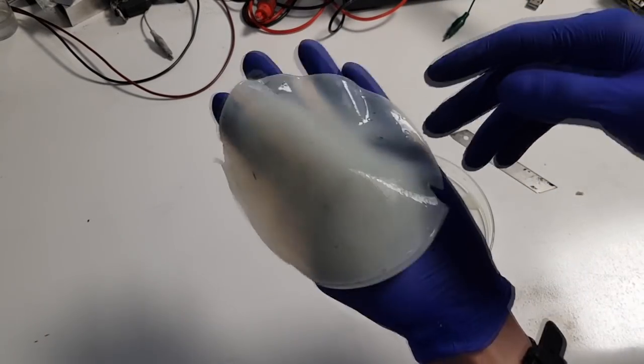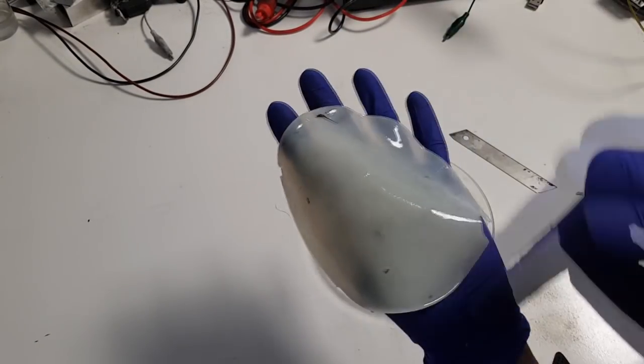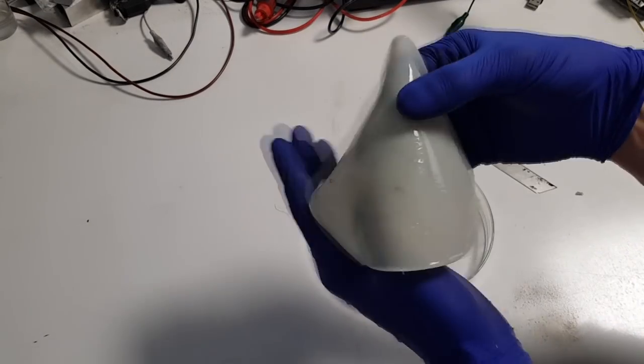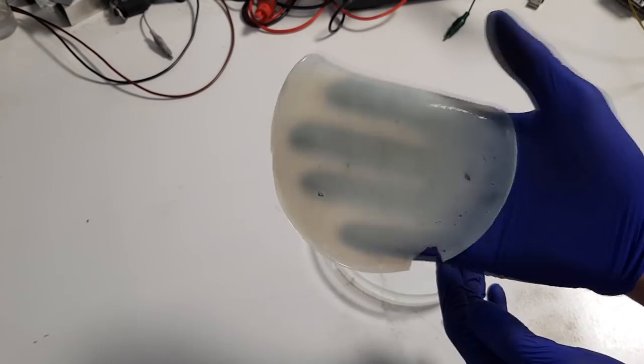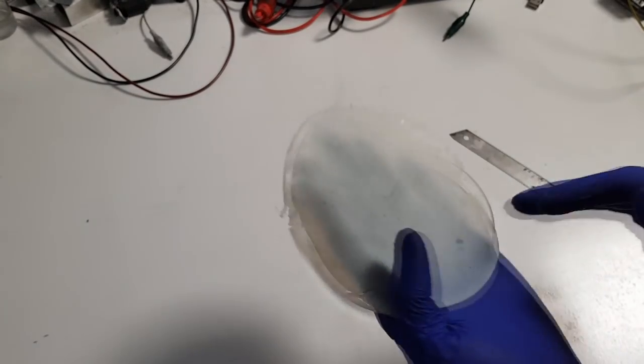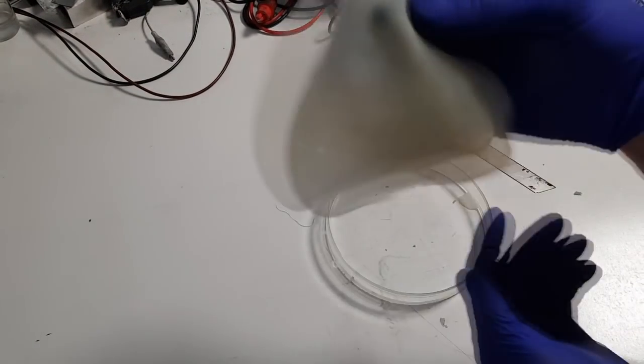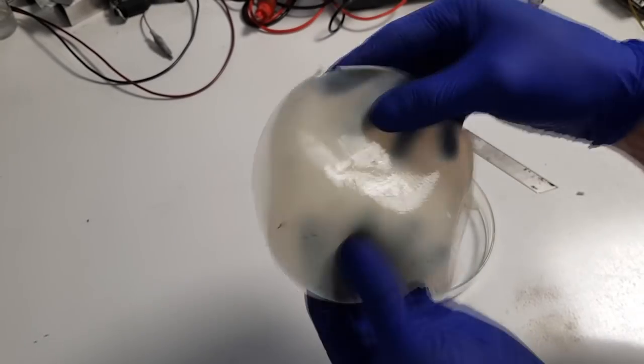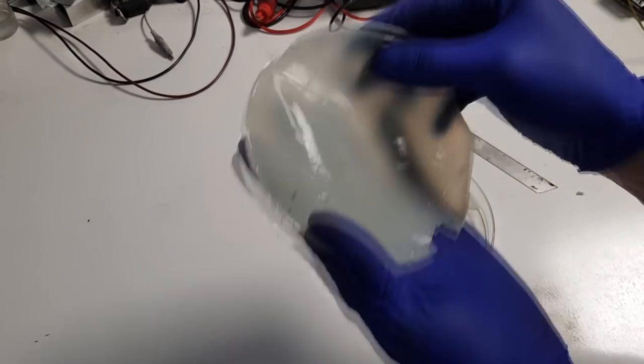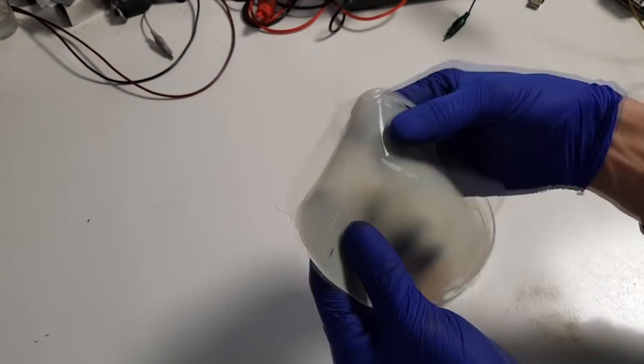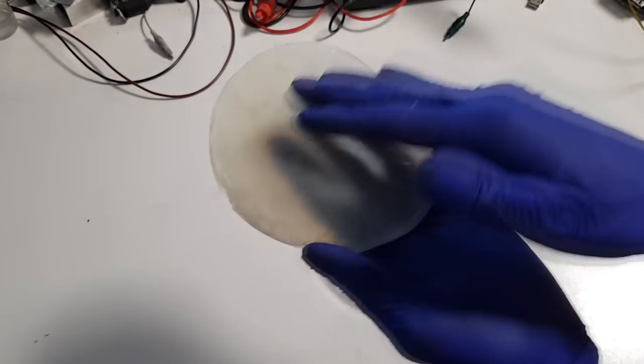So right now what you need to do, you need to cut it to the size of your battery and you will be fine with this one. But if this separator, I mean electrolyte, gets too dry, just add a little bit of water and you will get like this again.